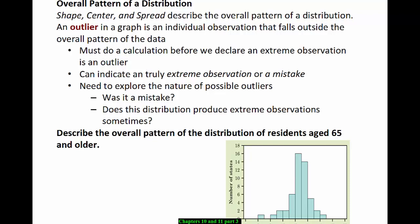We have a definition. An outlier in a graph is an individual observation that falls outside the overall pattern of the data. We must do a calculation before we declare an extreme observation is exactly an outlier. We'll do that in Chapter 12. This can either indicate a truly extreme observation, or maybe it was a mistake. So you need to explore the nature of possible outliers. Was it a mistake, or does this distribution produce extreme observations sometimes?